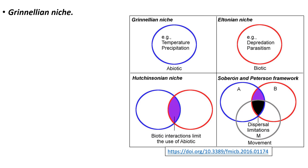The second concept is the Eltonian Niche. In this idea, they consider the parasite's role in the ecosystem and its interactions with other organisms. Under this scenario, the entire area inside the circle is suitable and accessible for the parasite.